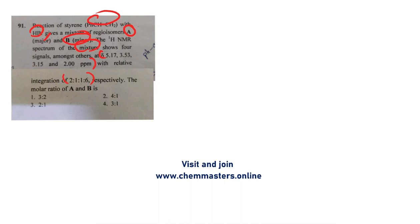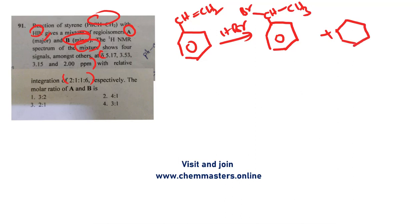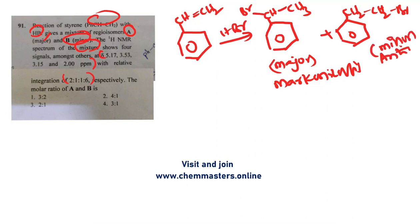To answer this problem, first we need to understand the information given. Here styrene is reacting with HBr, producing two products: one is the major product and one is the minor product. Which is the major one? Simply the first one is the major product because it is Markovnikov product, and the second one is the minor one because it is anti-Markovnikov product.